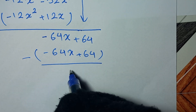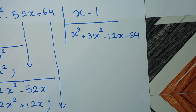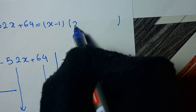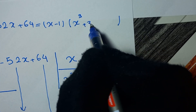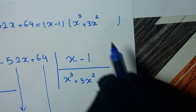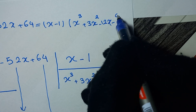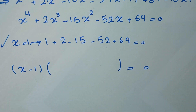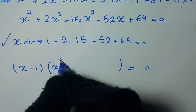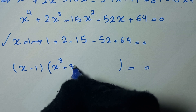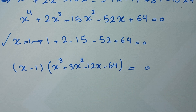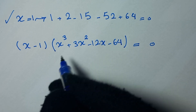So we find this bracket: x cubed plus 3x squared minus 12x minus 64. So we can write x to the power of 4 plus 2x cubed minus 15x squared minus 52x plus 64 equals x minus 1 times x cubed plus 3x squared minus 12x minus 64. This product equals zero, so we have two solutions.